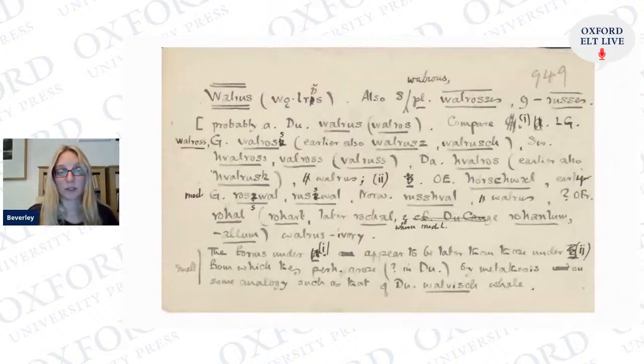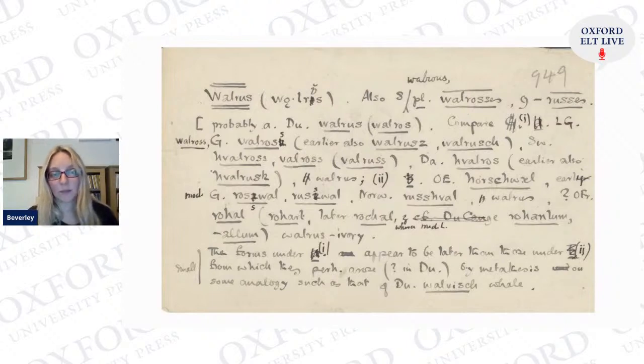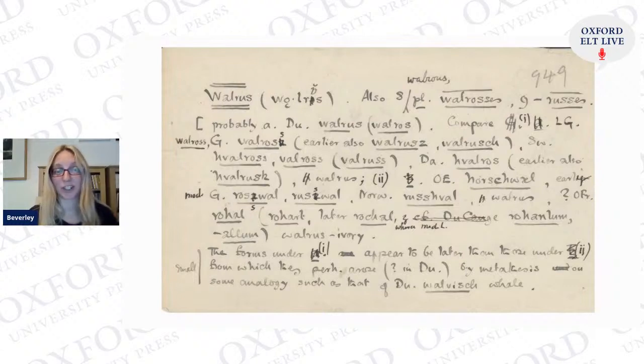One of the most famous assistants was J.R.R. Tolkien, author of The Lord of the Rings and The Hobbit. He had just finished serving in the First World War and was looking for work. He knew Oxford well because he'd studied there, so someone suggested he could work on the OED. He mostly worked on the letter W. This is his draft slip for the word 'walrus,' showing various forms of the word and its history. It's really easy to identify Tolkien's handwriting in the bundles of slips because he has such beautiful handwriting.